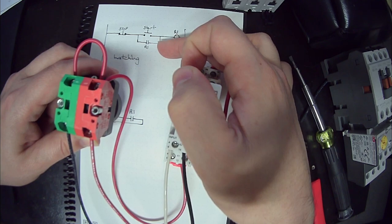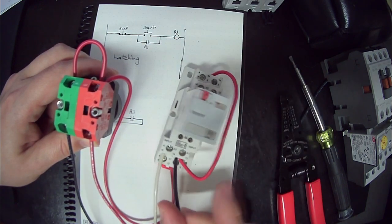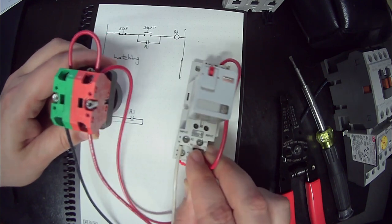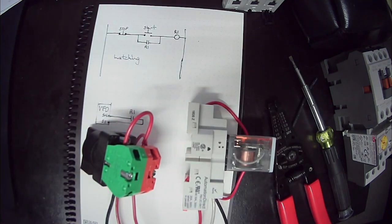And then both of those, on the other side of my start, you see you got your black and your red, they come together on the A1 of the coil. That's a latching circuit.